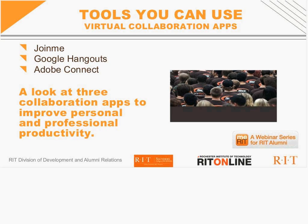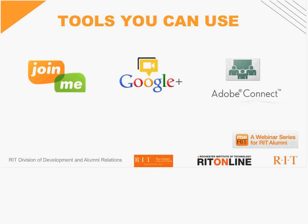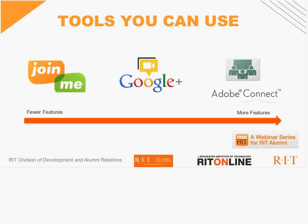Many of you may already be familiar with these tools, and one key takeaway is that one isn't better than another. We chose these three applications because they provide a range of features and cost. Generally speaking, Join.me is free, Google Hangouts is free, and Adobe Connect has a cost. Adobe Connect is probably the richest of the three in terms of capabilities.